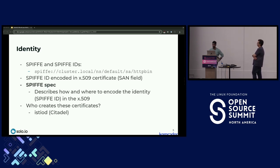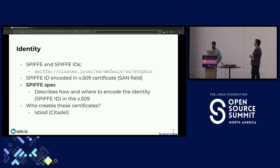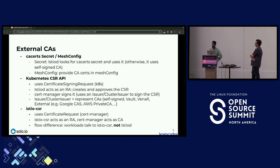The SPIFFE ID is a string specifying the domain name, the namespace, the service account, and the actual end service that will have the SPIFFE ID attached. We can effectively encode this ID inside an X.509 certificate and issue it directly to the workload. There are also other options available to us, such as external CAs.